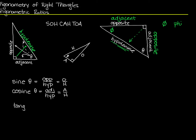And the tangent of theta is the only two sides left that we haven't used together — we have opposite with hypotenuse, and adjacent with hypotenuse, but we haven't talked about the relationship between the opposite and the adjacent yet. So that's the tangent of theta. I consider these the three primary trigonometric ratios, but there are six others, and I'll talk about those in just a minute. The tangent can also be written as O over A.